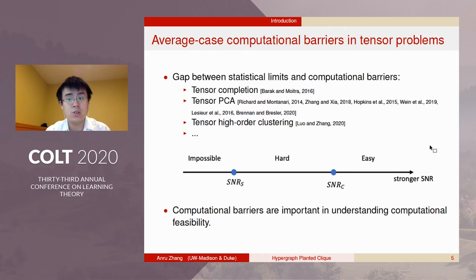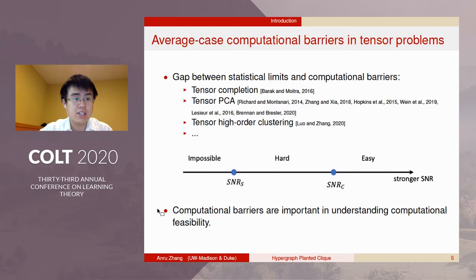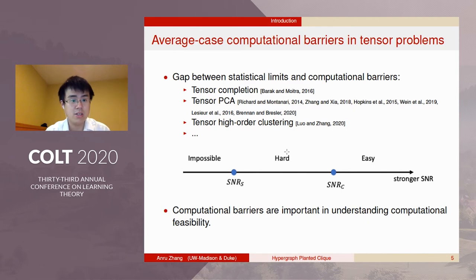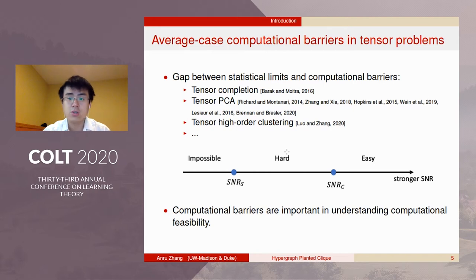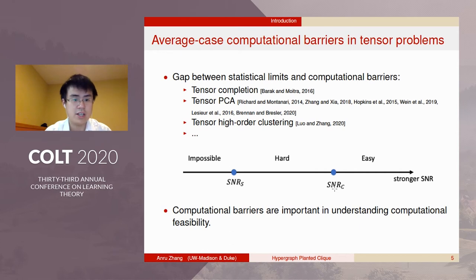Oftentimes, when the signal-to-noise ratio is strong, the problem can be solved in polynomial time. When the SNR is weak, the problem is not solvable statistically. When the SNR is moderate, the problem is hard in the sense that it is solvable with superpolynomial time algorithms, but may not be solvable in polynomial time. Identifying the statistical limit SNRs and the computational limit SNRs is crucial in understanding computational feasibility for various high-dimensional problems.